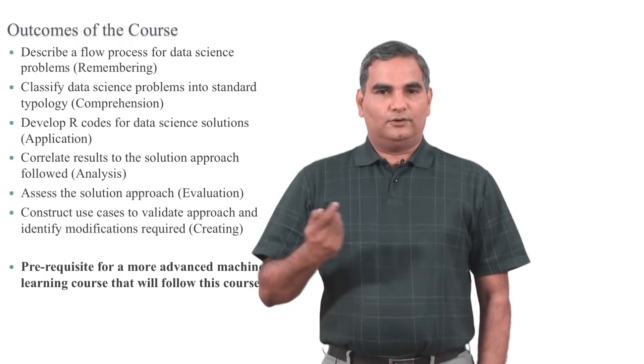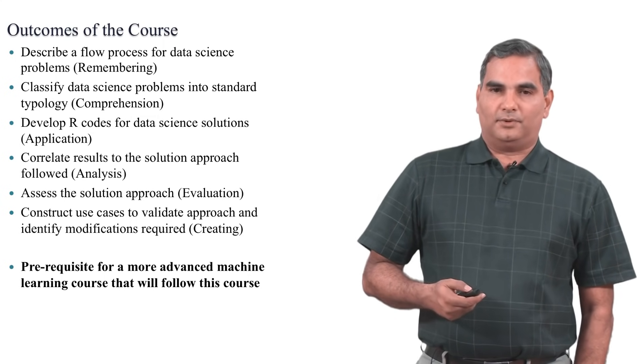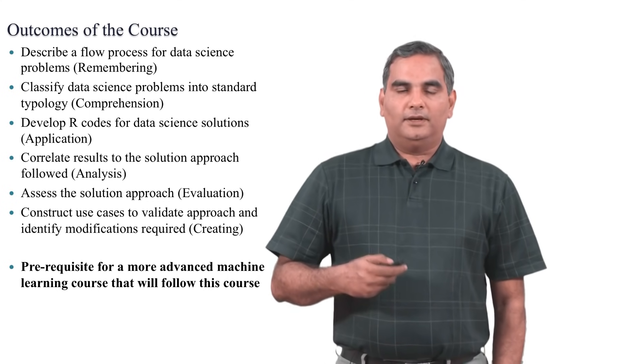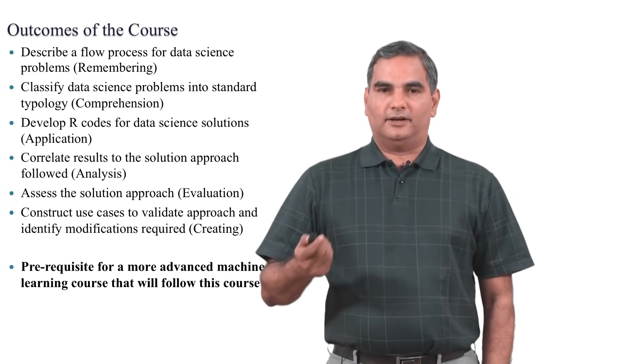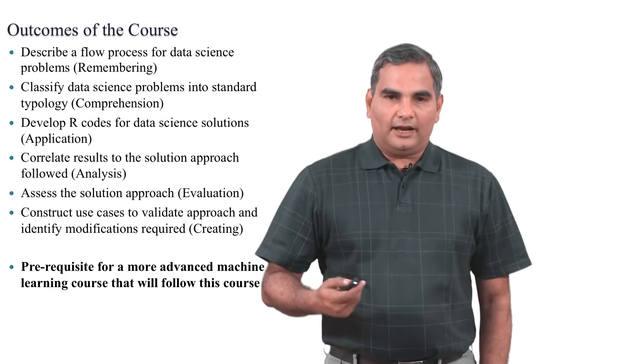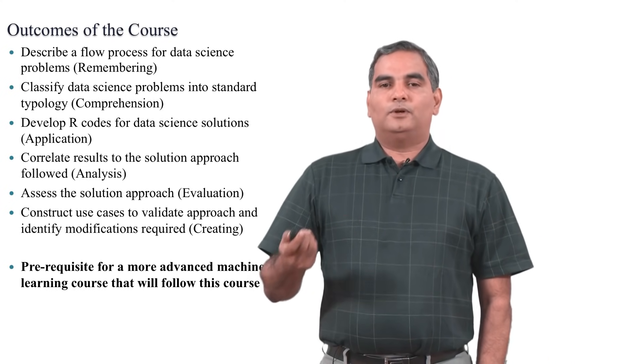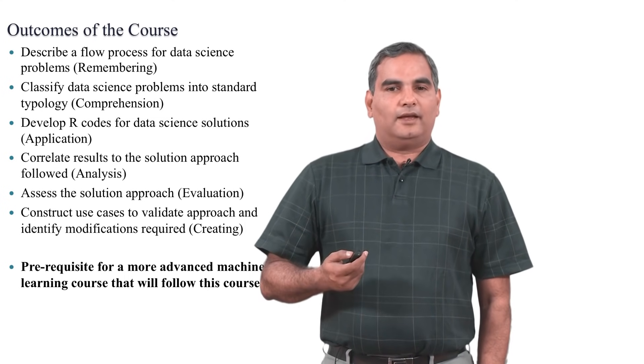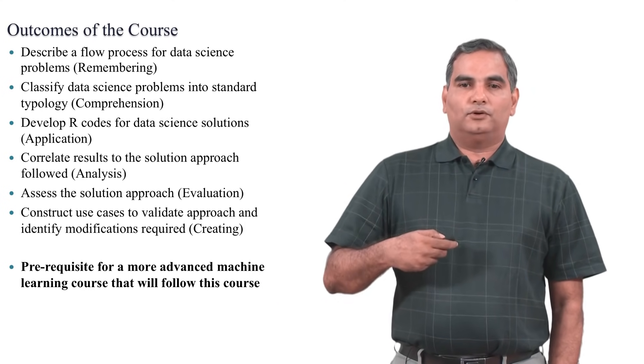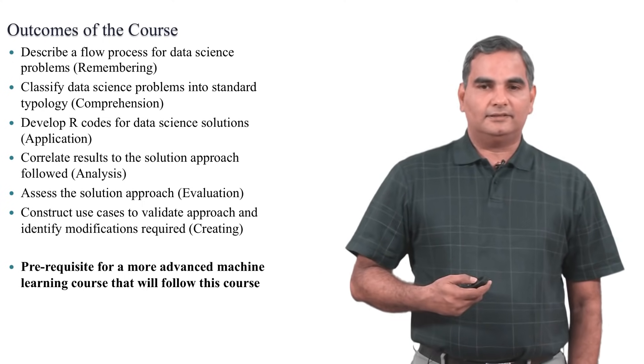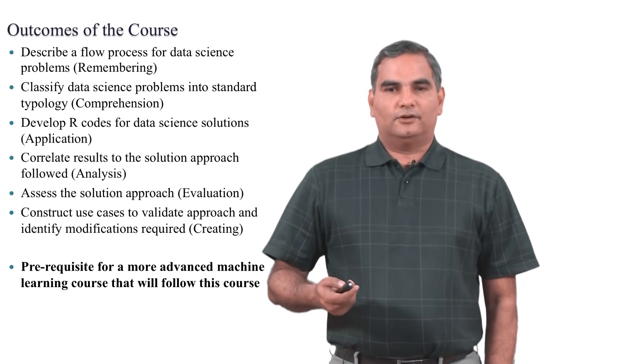Now that is the outline of the course. Once you are done with this course, what do we expect the outcomes of the course to be? In other words, what can you do if you do this course well? First, you will be able to describe a flow process for any data science problem that you come across. You will be able to classify data science problems into standard typology. You would be able to use R as a programming platform to solve data science problems. And once you program and get some results, then you will be able to correlate the results that you get to the solution approach that you follow, which will help you assess the solution approach. And in cases where you are not happy with the solution approach, you will be able to do modifications as required. And finally, this course is the first fundamental course on data science which will be a prerequisite for more advanced machine learning courses that will follow this course.